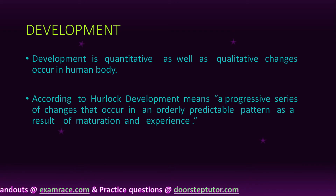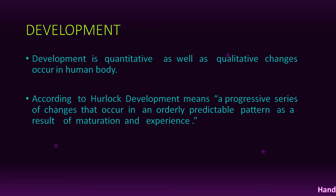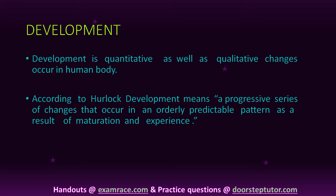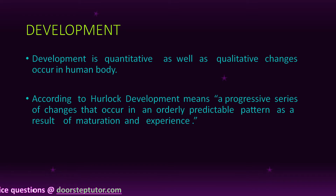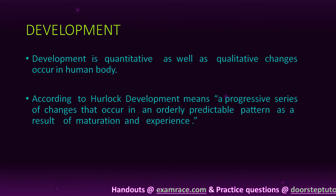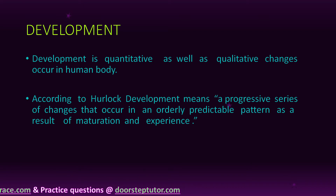According to Hurlock, development is a progressive series of changes that occur in an orderly, predictable pattern as a result of maturation and experience. Progressive series of change means everything happens in sequence — an orderly, predictable sequence. Like when we prepare for an exam, we start preparation in a sequence — first chapter, second chapter — so development follows that same orderly, predictable pattern.